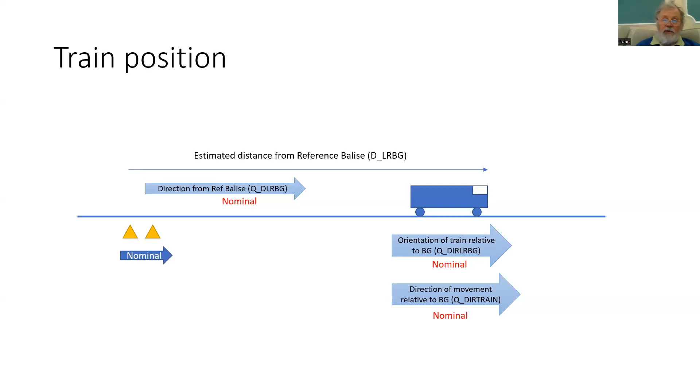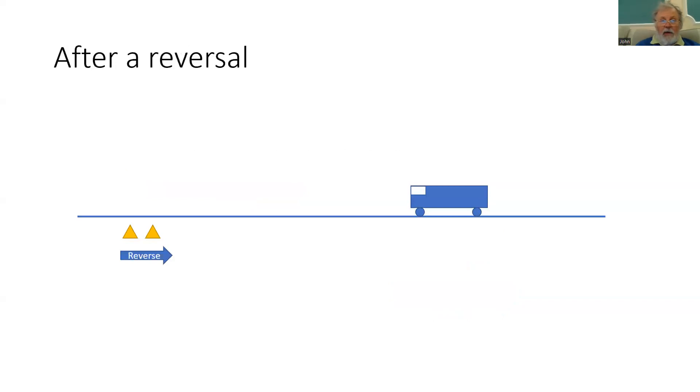If however, the train was going backwards, then that variable would change. Now, sometimes a train enters a terminal platform, so it read the balise group on the way in and then turns around and is now heading back towards the same balise group.